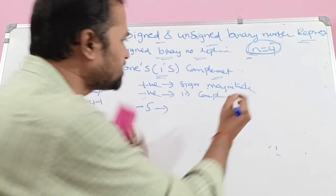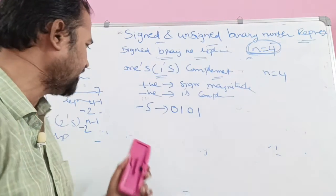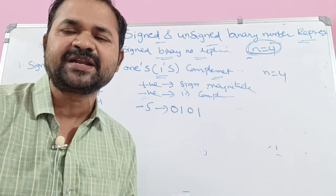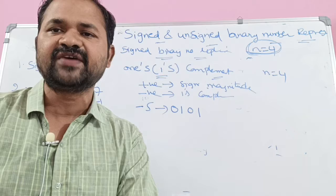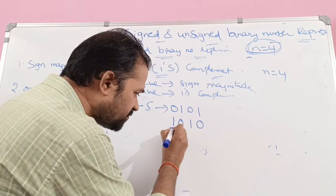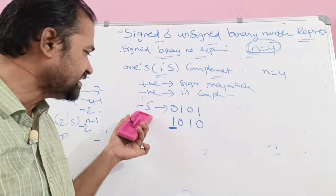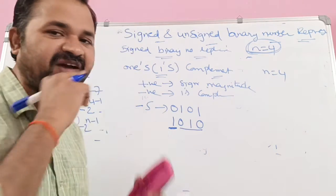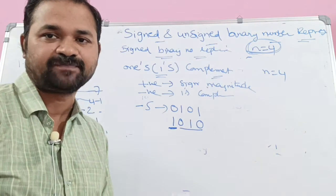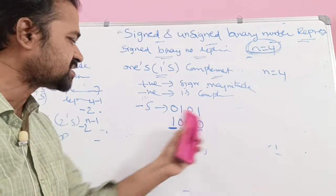+5 in binary with 4 bits is 0101. For one's complement representation of −5, zeros are converted to ones and ones are converted to zeros: 0→1, 1→0, 0→1, 1→0, giving 1010. The first bit (MSB) is the sign bit, which is 1, indicating a negative number. The remaining 3 bits 010 specify the magnitude. So −5 in one's complement notation is 1010.